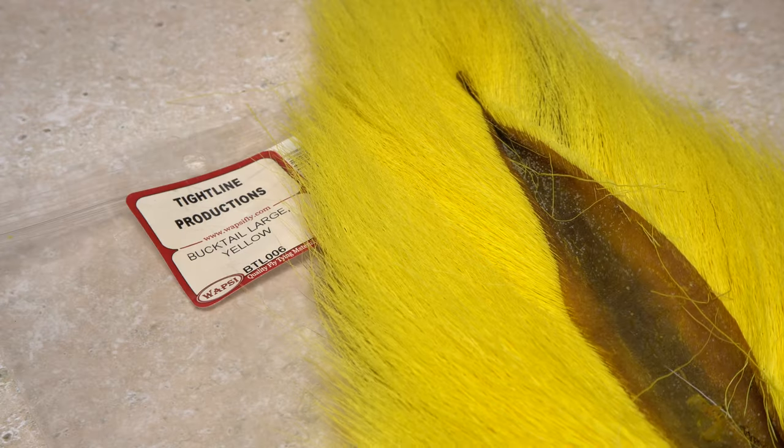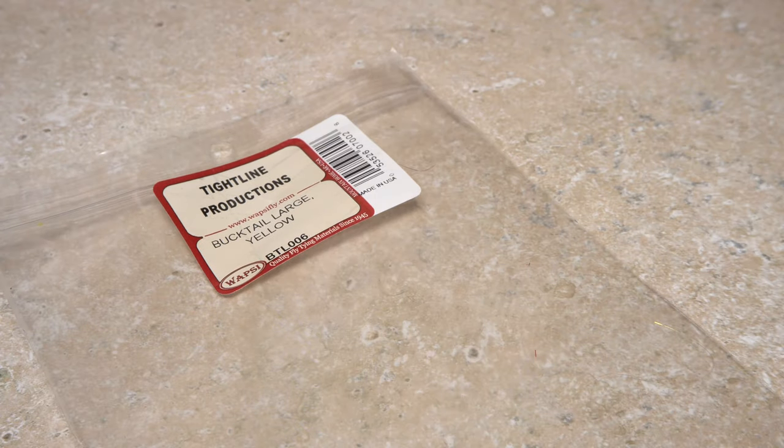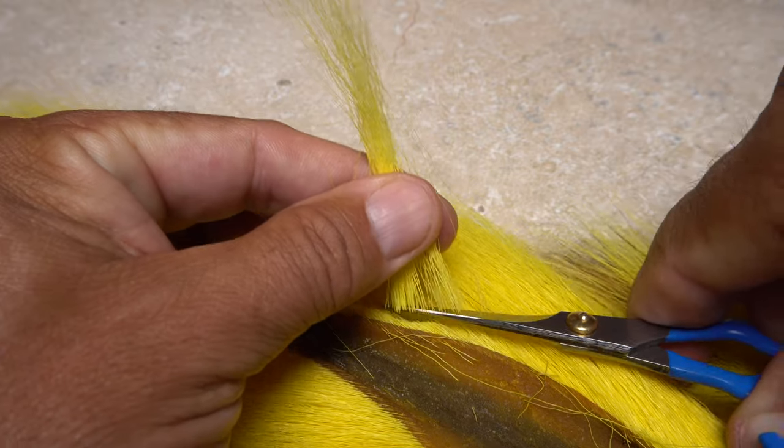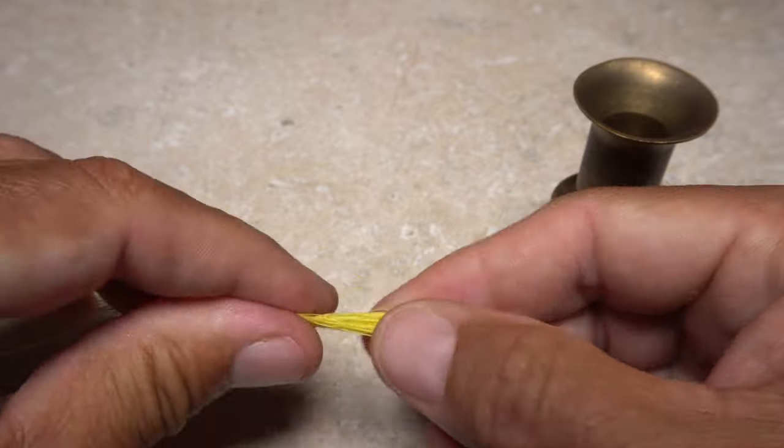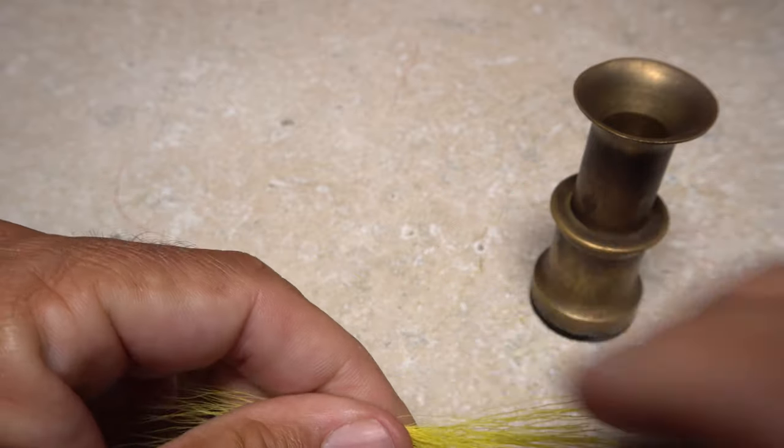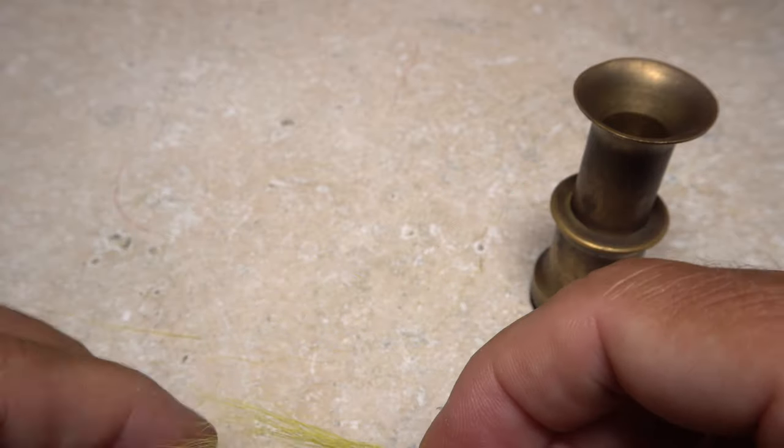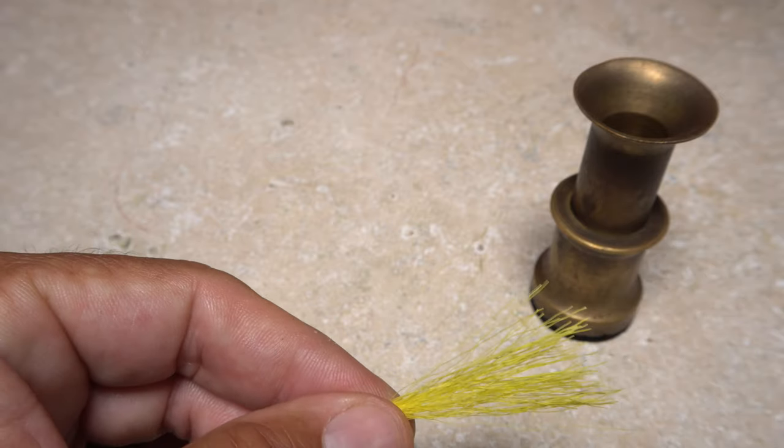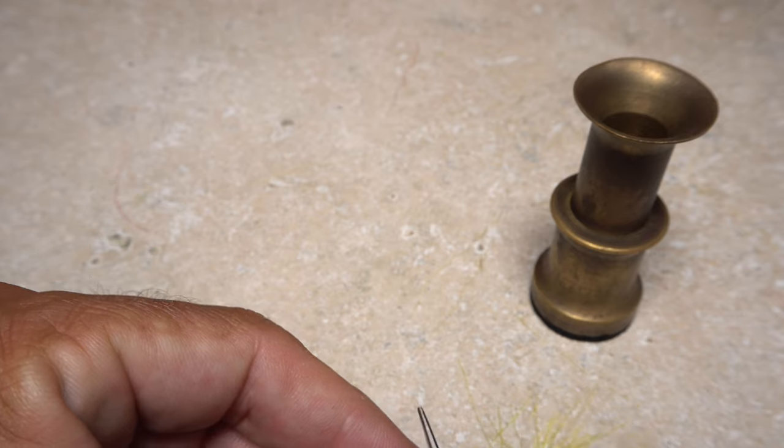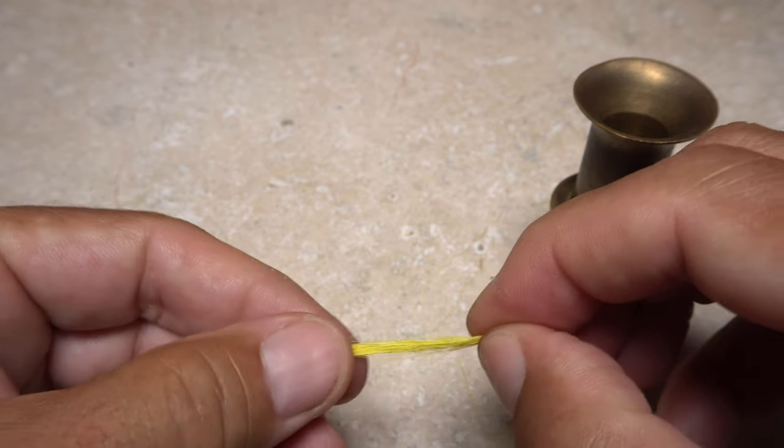Yellow bucktail is used to form the lower part of the fly's wing. You really don't need much at all. After snipping a small clump of hair free from the hide, strip out any short hairs from the butts and any excessively long hairs from the tips. The hairs are generally way too long for the fly, so I like to snip an inch or so of the butt ends off, which makes stacking a bit easier.